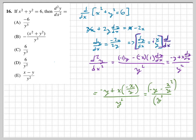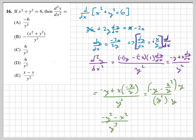We have a fraction inside a fraction, so we multiply both numerator and denominator by y. This gives negative y squared minus x squared over y cubed. Since both numerator terms are negative, we factor out the negative to get the answer as negative times the quantity y squared plus x squared, divided by y cubed — which is letter B.